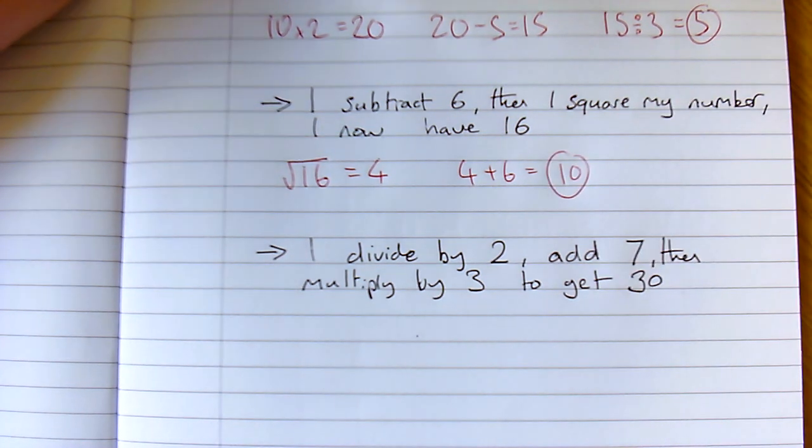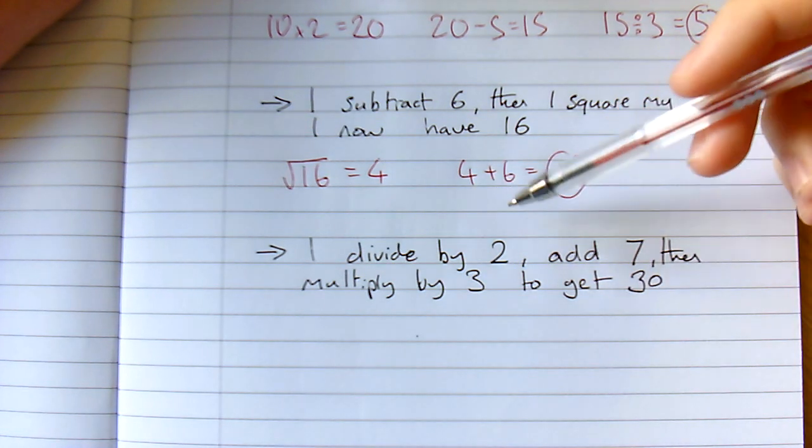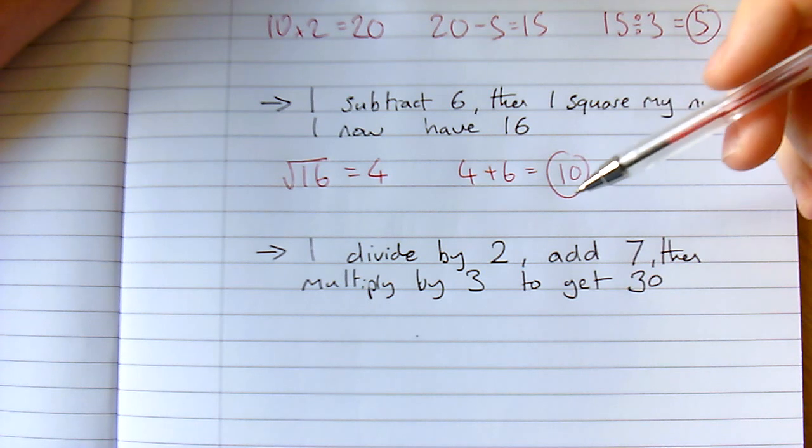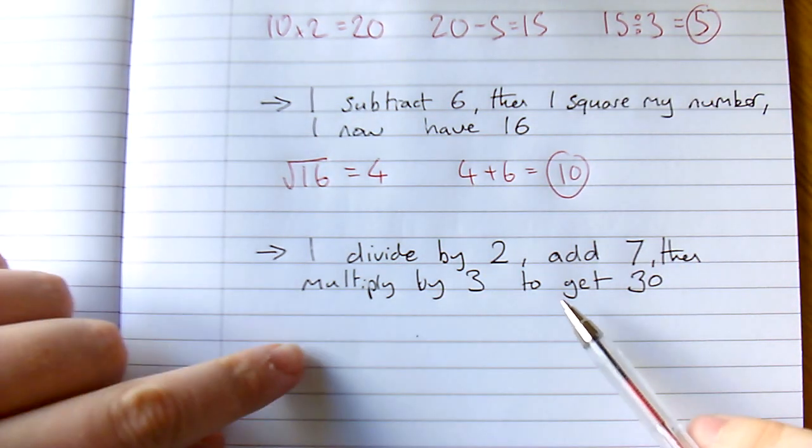Now for my final example there's quite a few steps here but it's quite doable. I divide by 2, I add 7, then I multiply by 3 to get 30. So okay, well I'm currently dealing with 30.